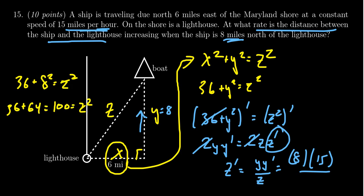So we get 36 plus 8 squared is 64. That's equal to 100. So z squared equals 100. Take the square root of both sides, you get z equals 10. So we make that substitution in over here.